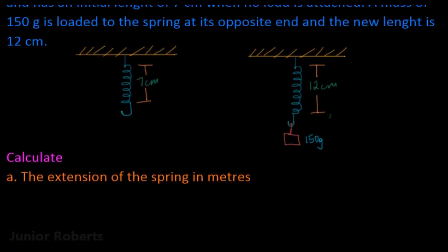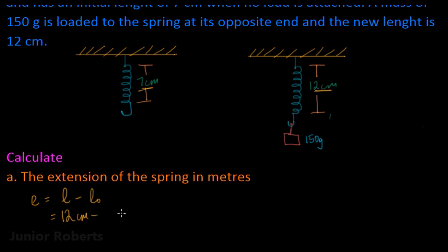The extension of the spring, let's call it e, is equal to L minus L-naught, where e is our extension, L is the final length, and L-naught is our original length. We're told that the final length is 12 centimeters and the initial length L-naught was seven centimeters. Taking the difference of 12 and 7 we get five centimeters.